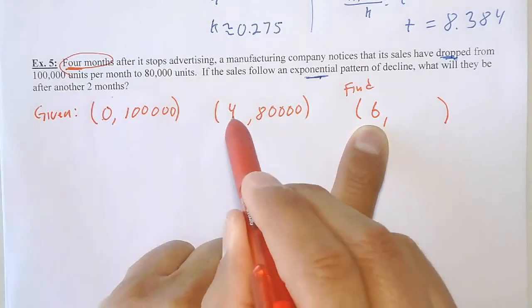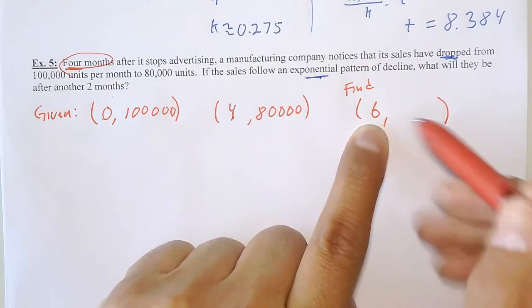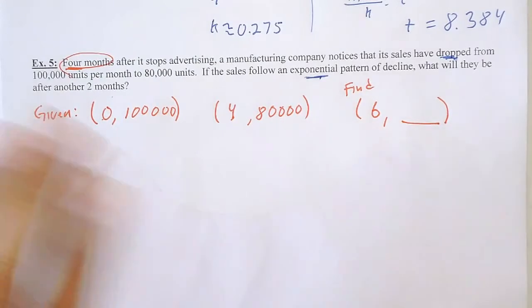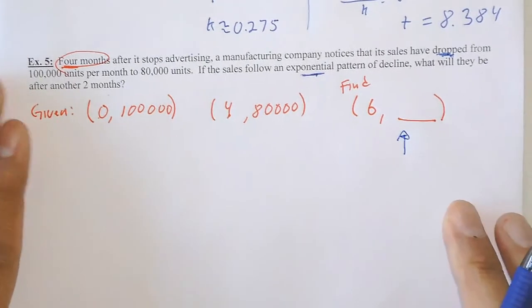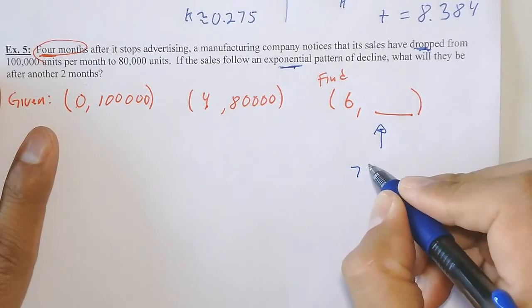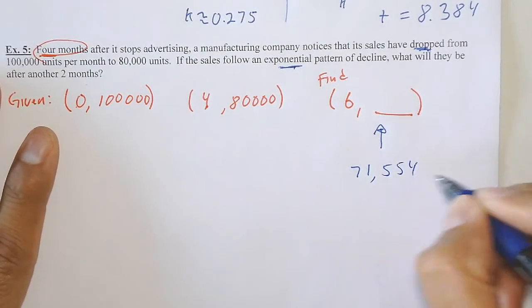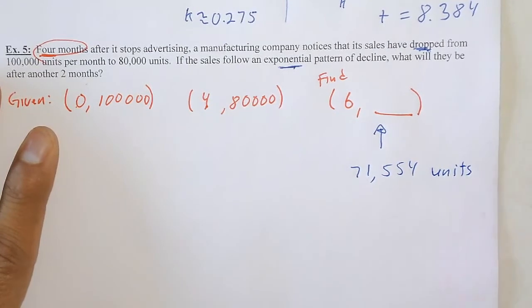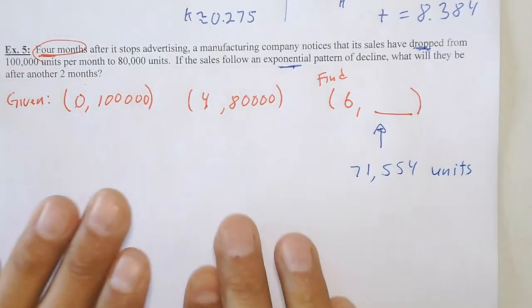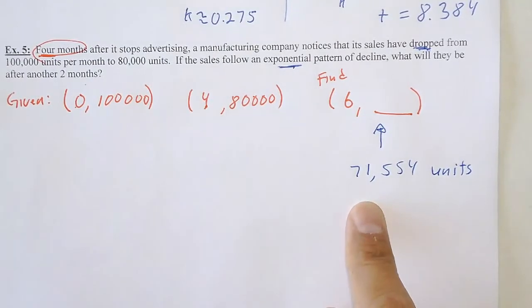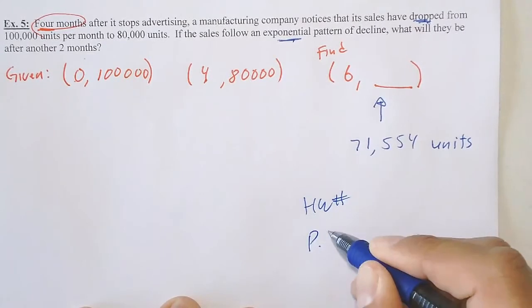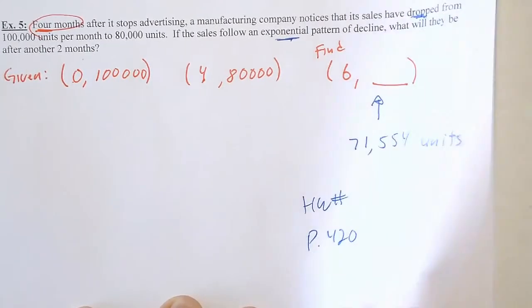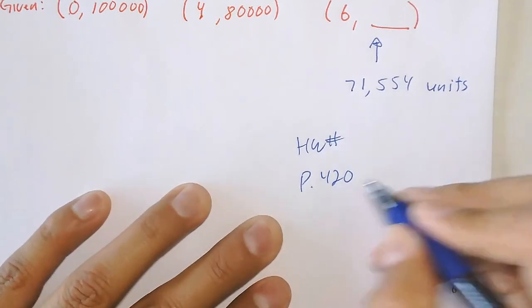Homework: page 420, problems 3 to 11 odd, 21 to 25 odd, 29, 37 odd, and then some interesting ones: 51, 53, 57. If you have any questions, let me know, and I hope to speak to you tomorrow or later today.